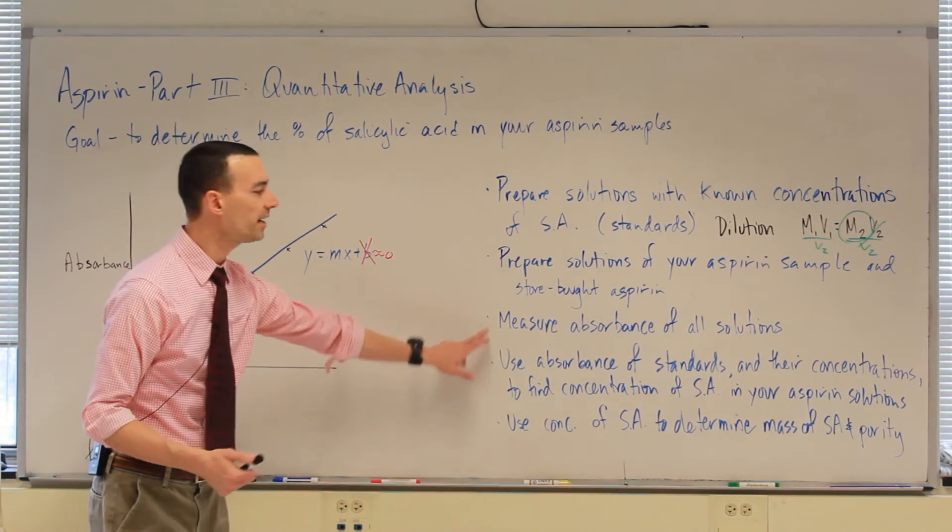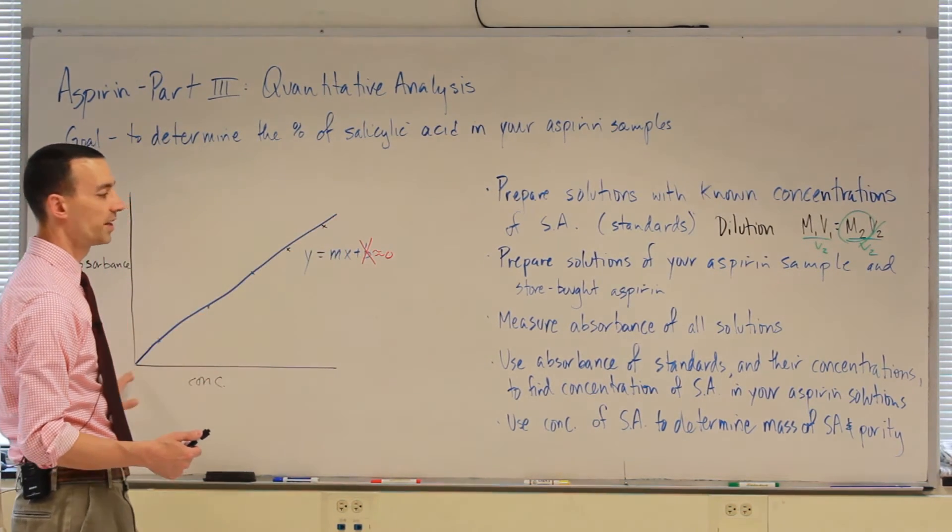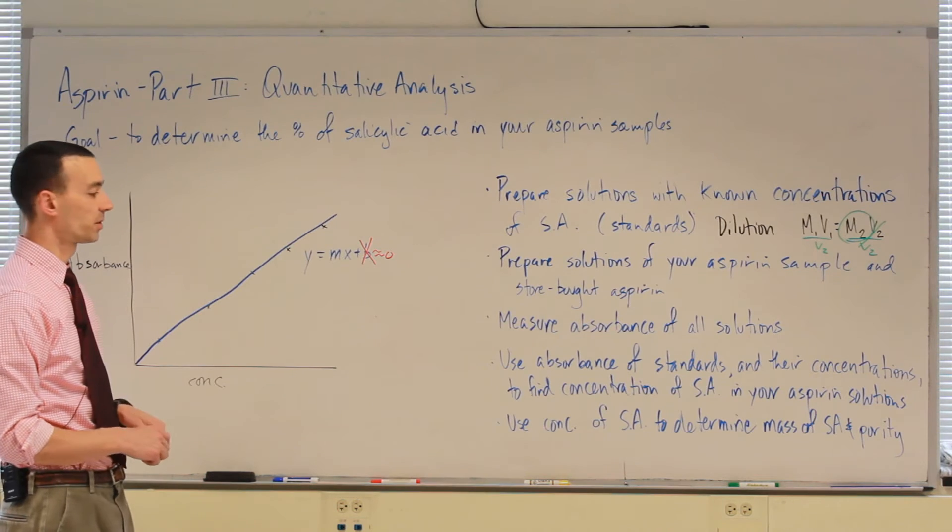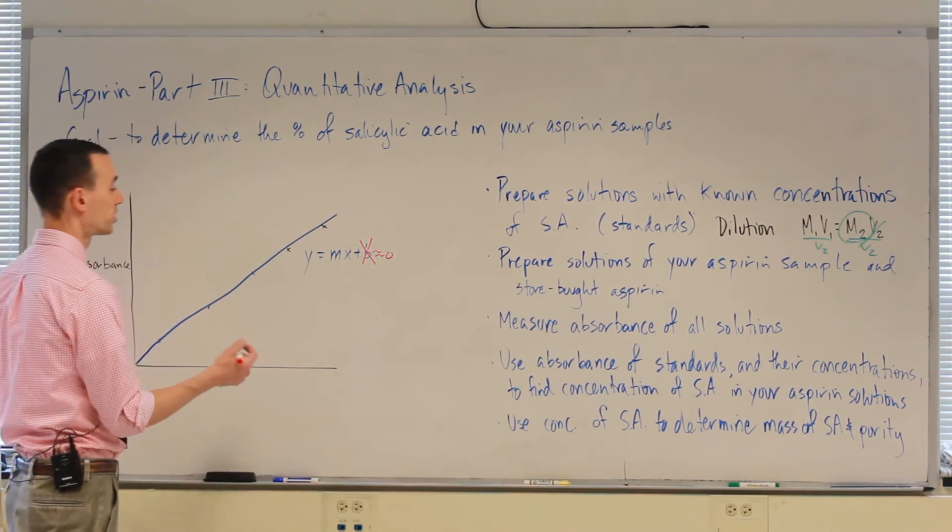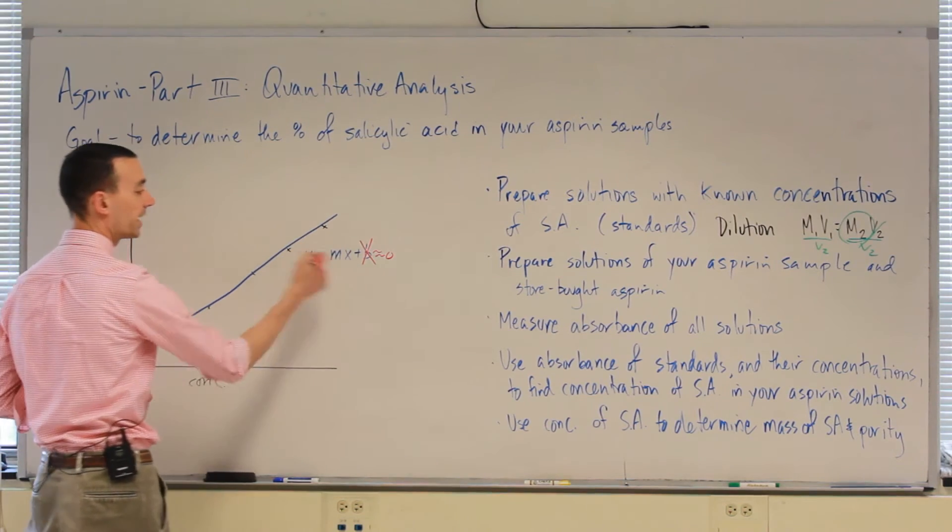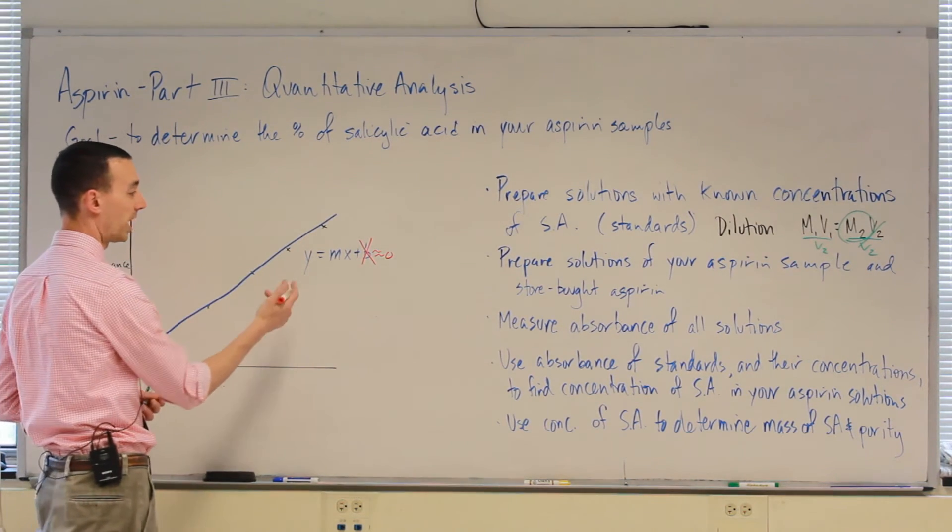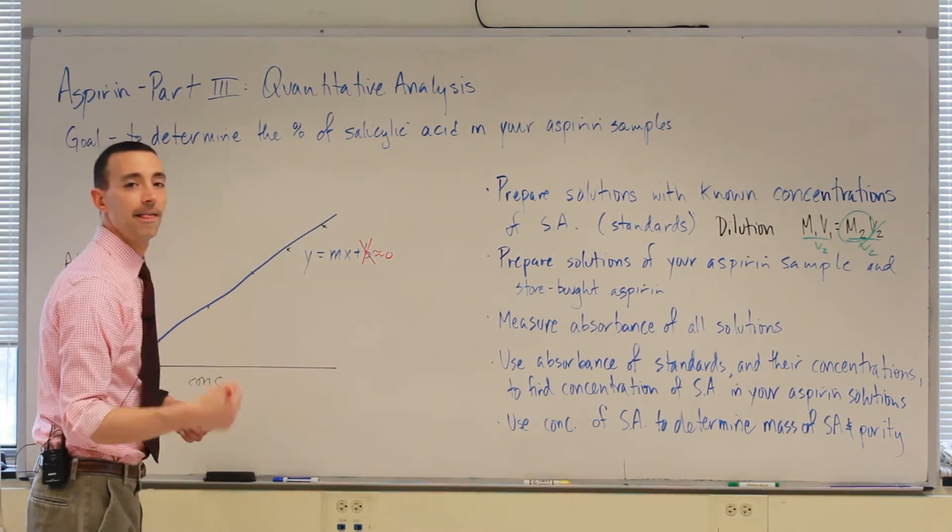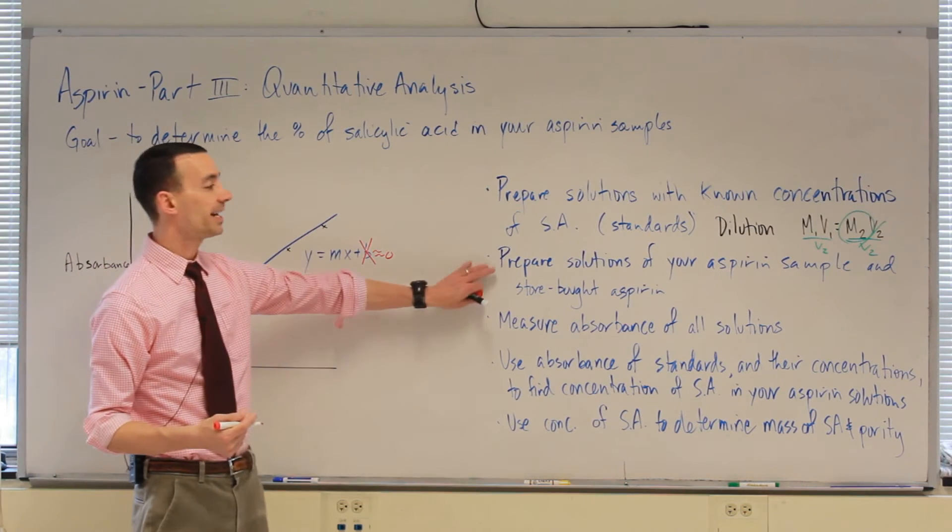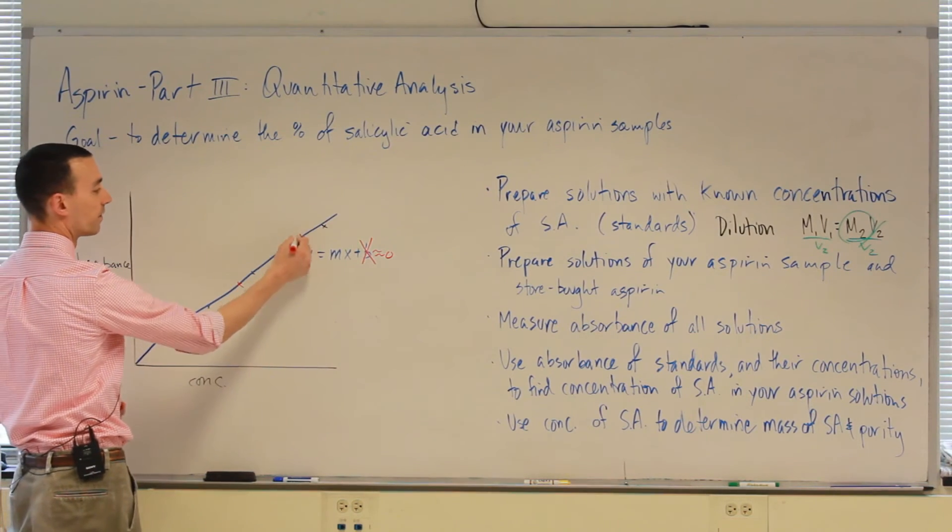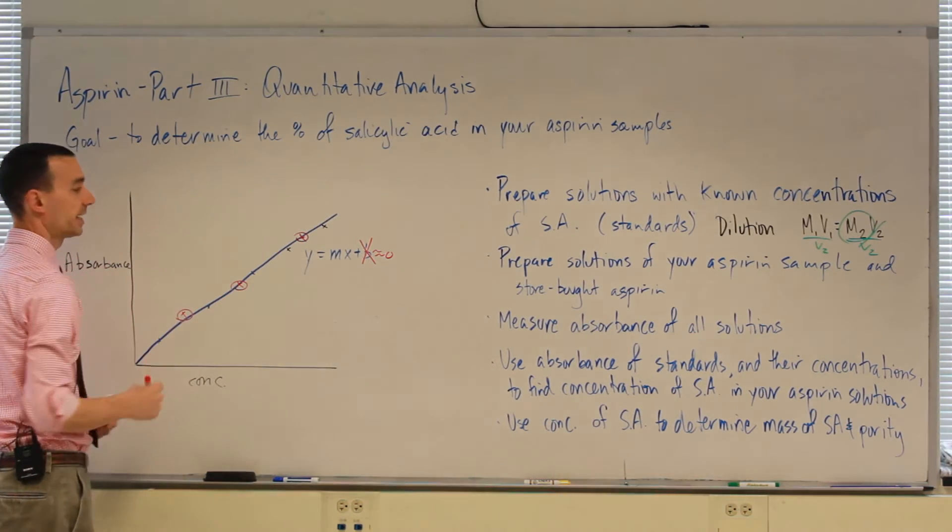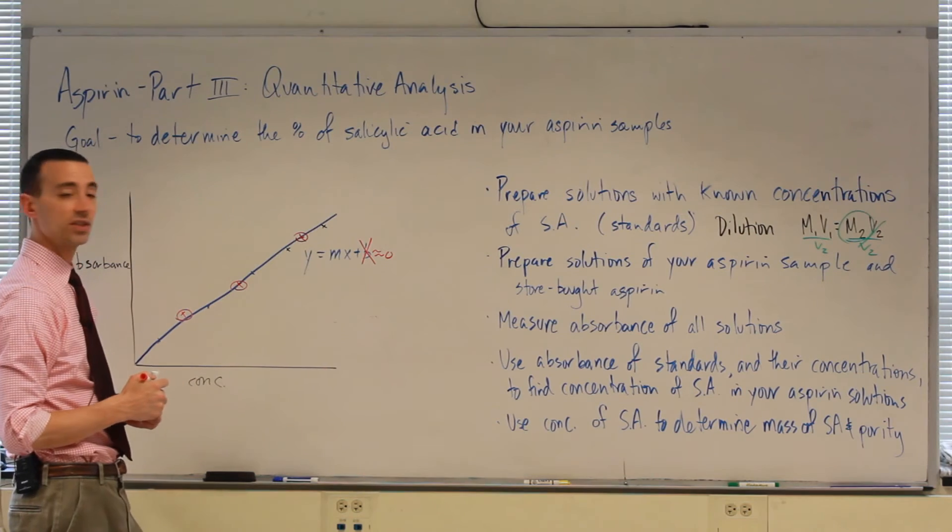You'll measure the absorbance of all the solutions. The standards and their concentrations will give you this graph, or a graph similar to this. You'll use the Excel program to generate the y equals mx plus b plot. Then your unknowns, your aspirin samples, may fall somewhere on this curve, hopefully, and you can determine their concentrations.